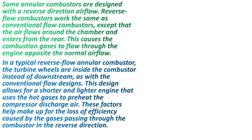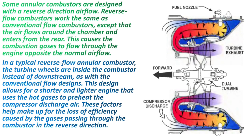An annular combustion chamber can also be designed with reverse directional airflow, in which air flows around the chamber and enters from the rear. Its main advantage is that turbine wheels can be placed inside the combustor instead of downstream, as in the conventional design. This reduces the length of the turbine shaft and thus reduces the weight of the engine. Here you can see a picture of a reverse flow type annular combustor — the turbines are inside the combustor and the turbine shaft is very short, further reducing engine weight.